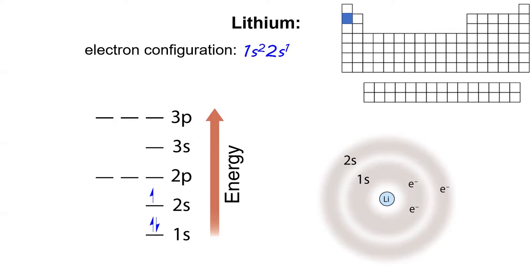The electron configuration for lithium is 1s² 2s¹, indicating that we have two electrons in the 1s subshell and one electron in the 2s subshell.